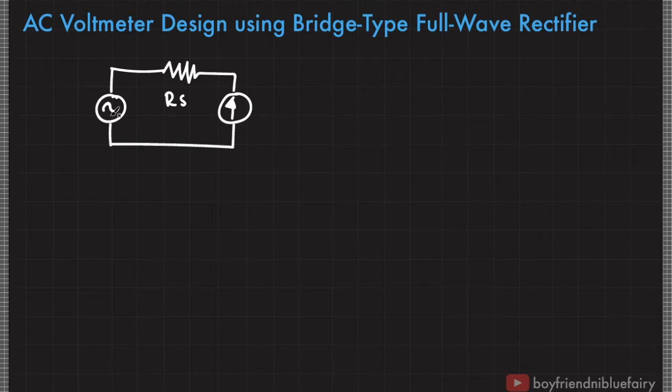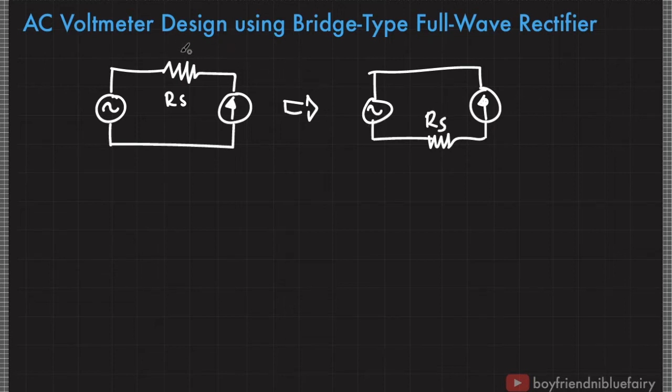Now since they belong to one loop or one connection, this is basically the same if we position the multiplier resistor after the galvanometer. This is also the same because the current that the AC source produces fluctuates over time, or it oscillates back and forth. So basically, these two circuits are equivalent.